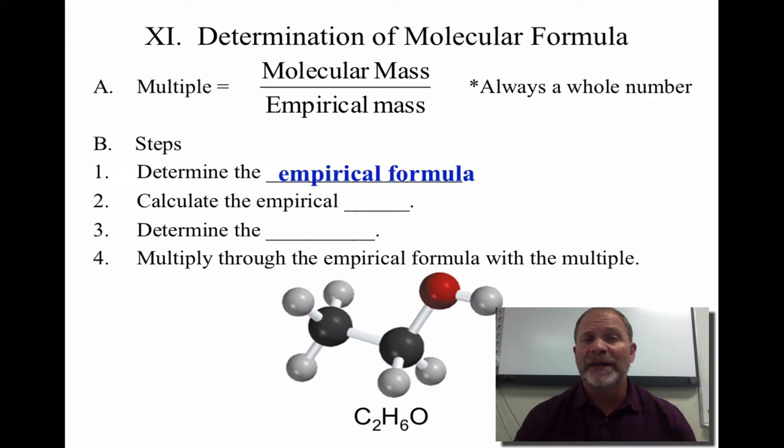And to do that, I will take the molecular mass divided by the empirical mass. The empirical mass is just the molar mass of the empirical formula that you calculate. The molecular mass is always given to you. You'll use regular rounding rules at this point in time.